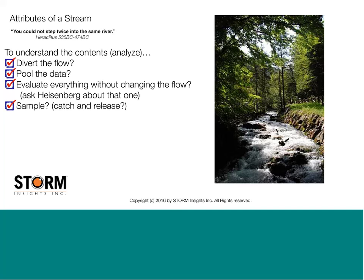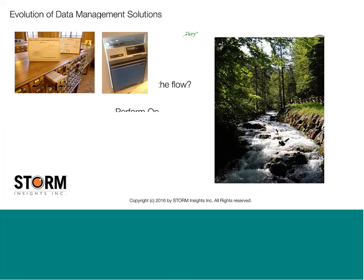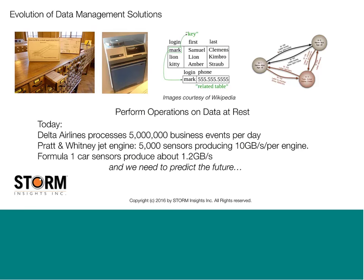Every time we try to understand what's in this flow, we have to be careful that we don't actually change the flow — unless that's our intent. And when I say ask Heisenberg, I'm not talking about Breaking Bad. I'm talking about the uncertainty principle: it's very difficult, if not impossible, to measure everything in your data stream without changing the properties of the stream. The last option is just to sample what's in there — kind of the catch and release. You go in, you look, and whatever you've taken out, you put back in.